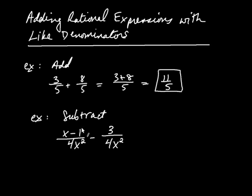You simply take the first numerator, and in this case we subtract the second numerator. So it's going to be x minus 1 minus 3 over the common denominator, which is 4x squared. And so then you combine like terms in the numerator. So x minus 4 divided by 4x squared.